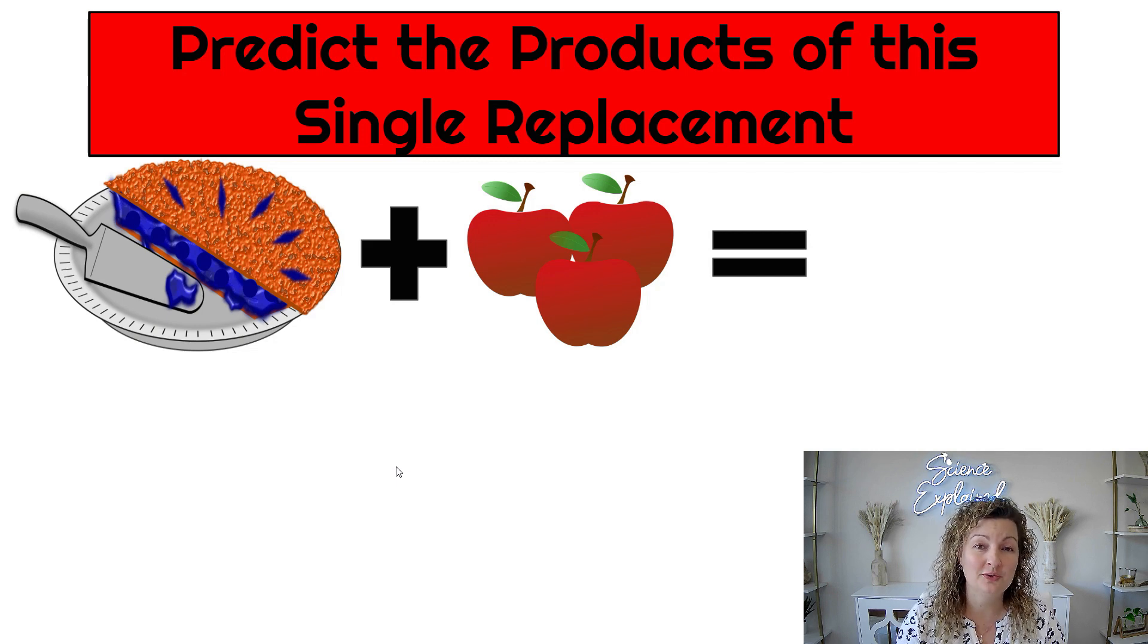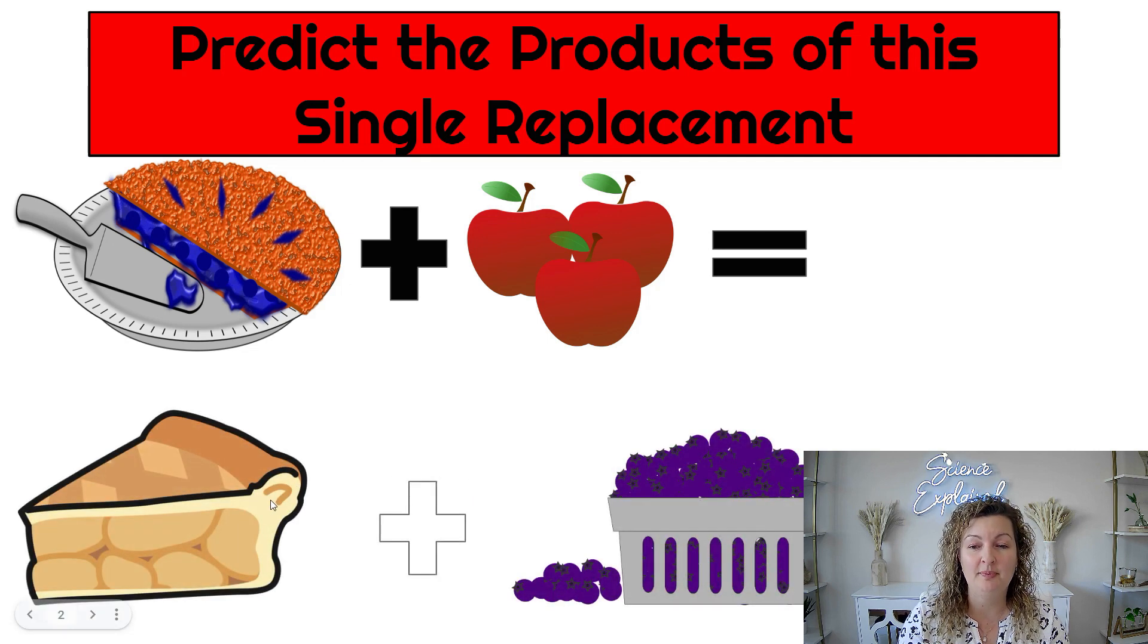So just a quick review about single replacement. You may have seen this before. So we have some blueberry pie plus apples and I bet you can predict the outcome with a single replacement. It's going to be an apple pie plus blueberries. So we just swapped out our fruits, right? A fruit for a fruit.